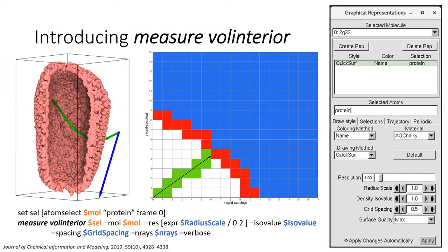The measurable interior method determines what constitutes inside versus outside of a container. The way it works is the space around your molecular structure is voxelized — a three-dimensional grid is superimposed on your structure, and each little cube in the grid is called a voxel. From the center of each voxel, a series of rays are cast. You can think of this as being analogous to shining a flashlight — you have a beam of light, you're casting a ray, and you can see where the ray falls and what it strikes. Depending on whether the rays strike the molecular surface or escape to the bounding box — the far outside of the system — we classify whether that voxel of origin is inside or outside of the container.